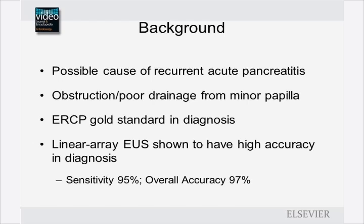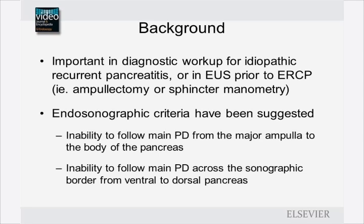Many consider pancreas divisum to be a cause of recurrent acute pancreatitis due to poor drainage at the minor papilla. Linear EUS has been shown to have high accuracy in diagnosis. EUS identification of divisum may be important prior to ERCP for ampullectomy or sphincter of Oddi manometry. Suggested EUS criteria for diagnosis include inability to follow the main pancreatic duct from the major ampulla to the body of the pancreas, or inability to follow the main PD across the sonographic border from the ventral to dorsal pancreas.